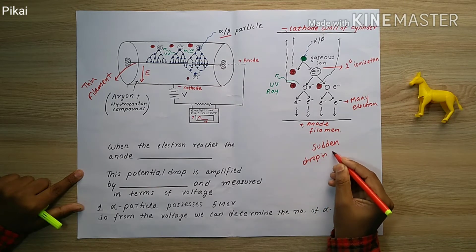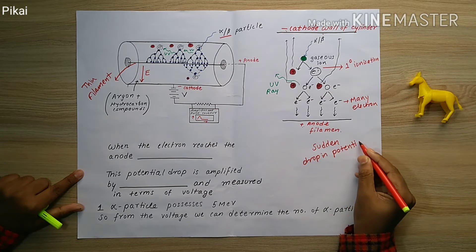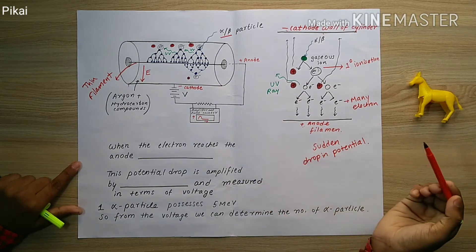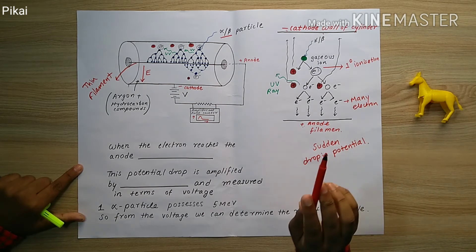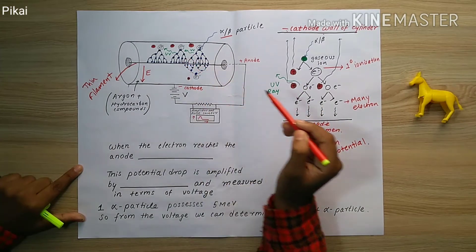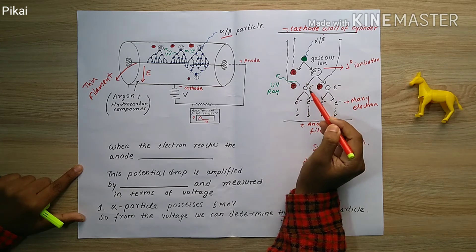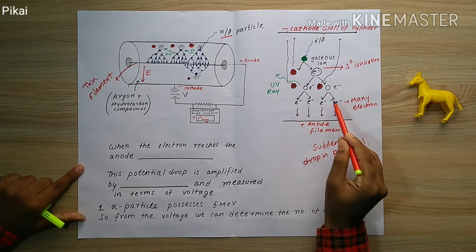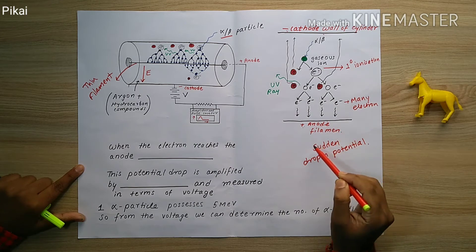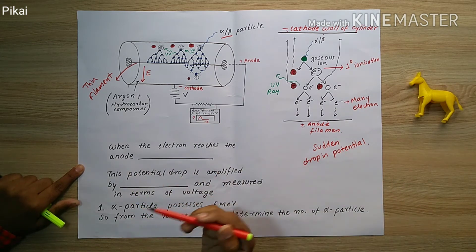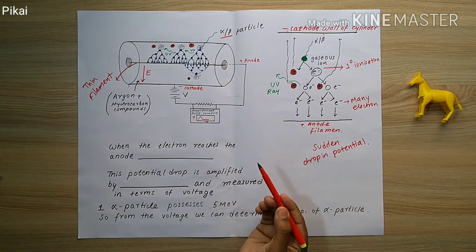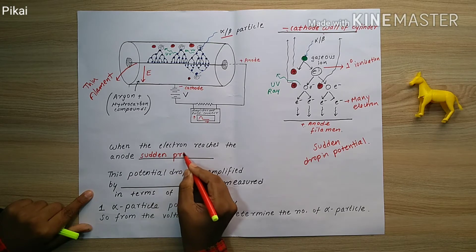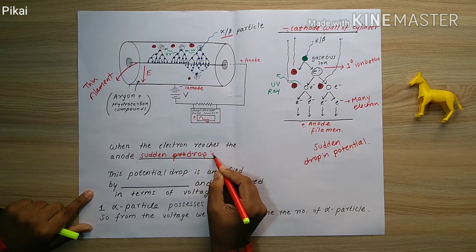When a huge number of electrons reach the positive anode filament — being negative in nature — the negative-positive interaction causes a sudden drop in the potential value. This sudden drop in potential is detected by the amplifier. The huge number of electrons interacting with the anode filament causes this sudden drop in potential, which is then measured by the amplifier.